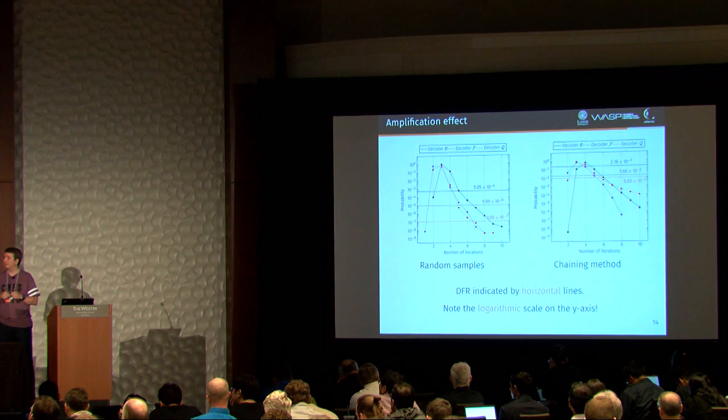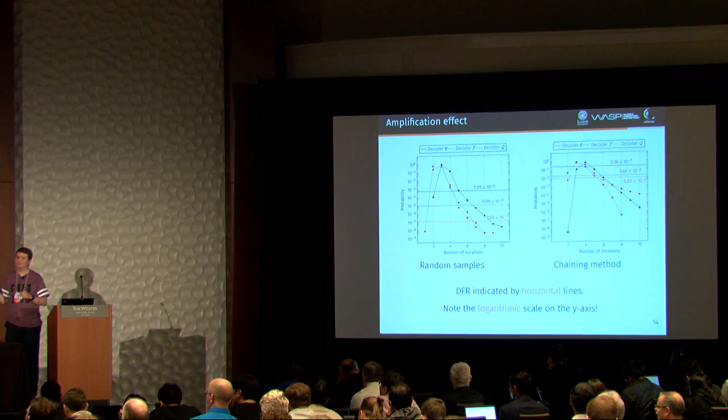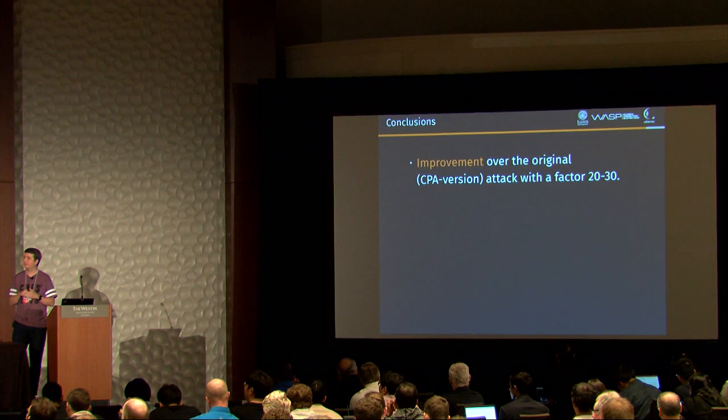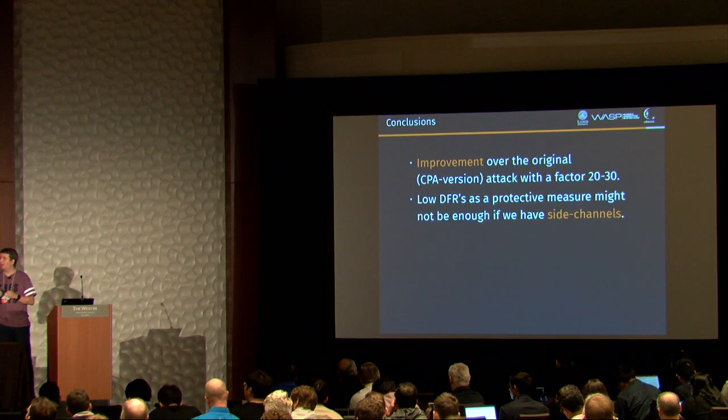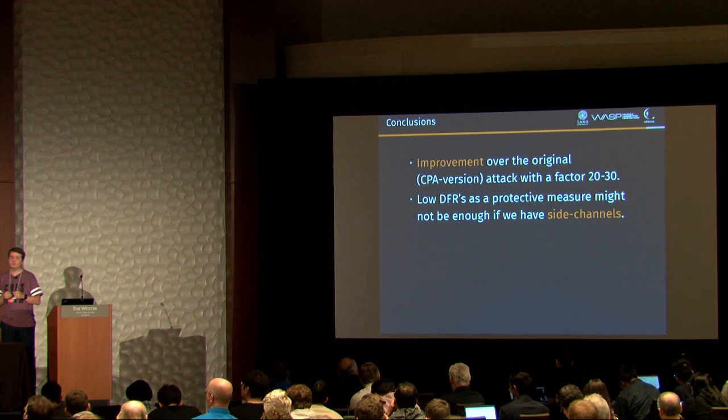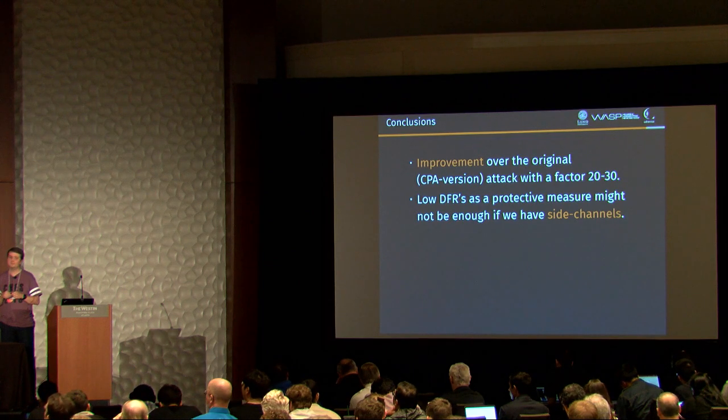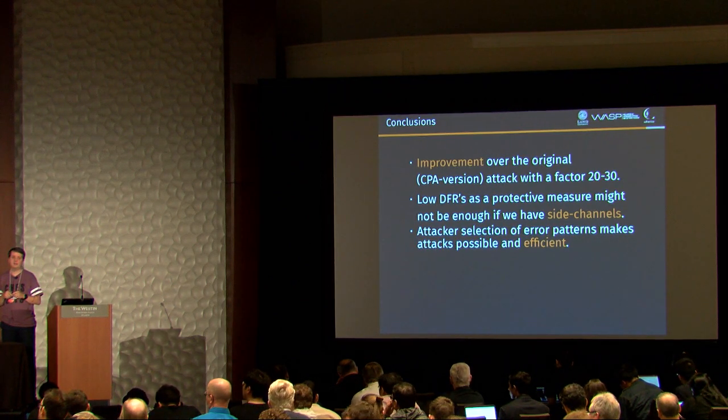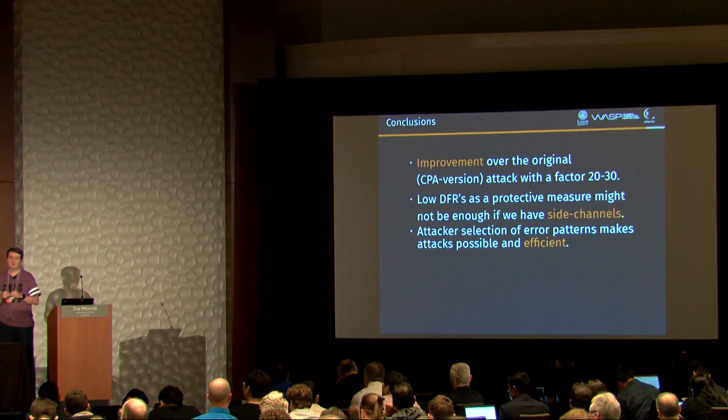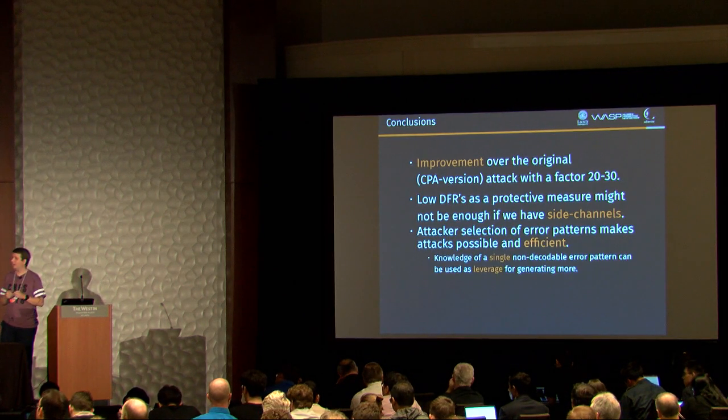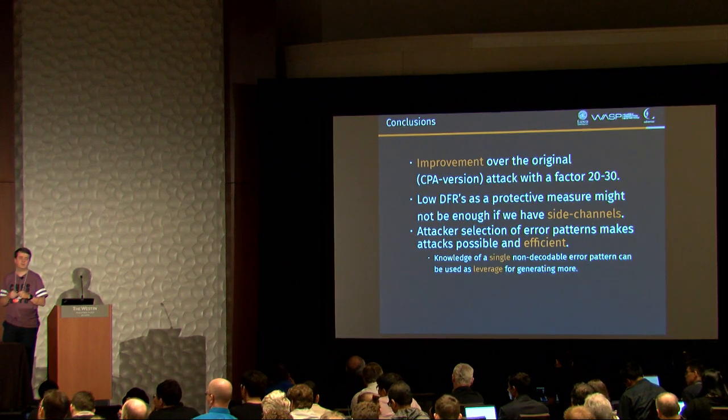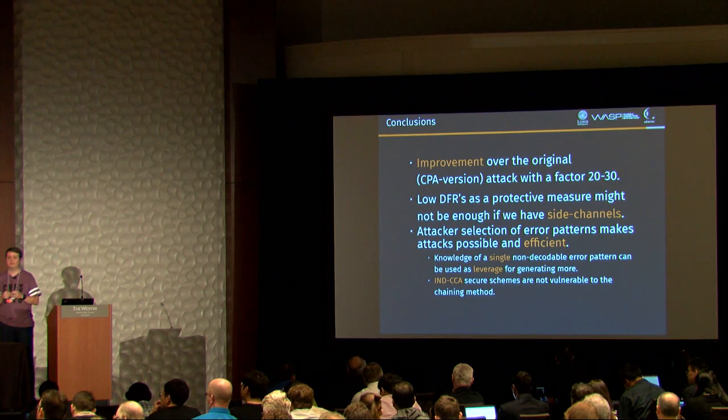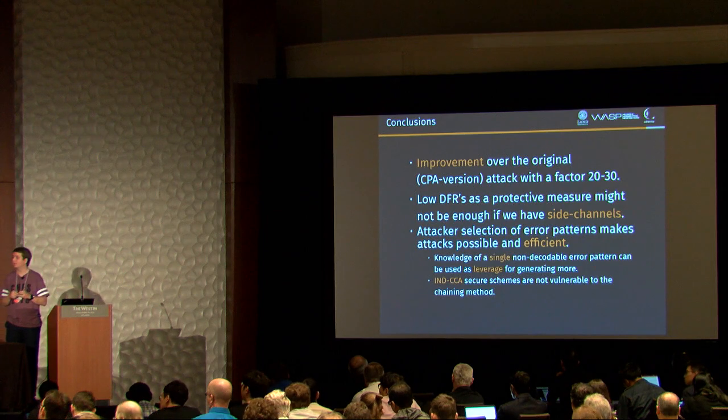And there's more to say about this graph, but I won't because it will take time. So let's wrap up and just conclude that we have made an improvement of the original attack by a factor of around 20 to 30, depending on whether or not we use side channels. We have, in a more general case, shown that the low decoding failure rate might not be enough as a protective measure, especially if we have side channels. Also, we have seen that letting the attacker decide their patterns is a bad idea. It opens up for attacks and also makes existing attacks more efficient. We show that using the knowledge of a single non-decodable error pattern has leverage for generating more patterns. Of course, this doesn't work for CCA-secure schemes because they do not allow us to select the error pattern on our own. And that's it. Thank you.